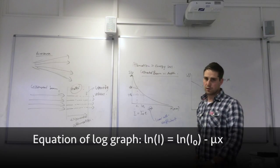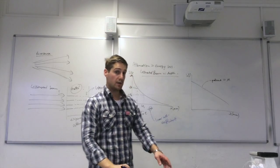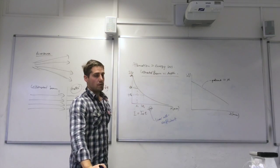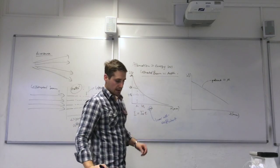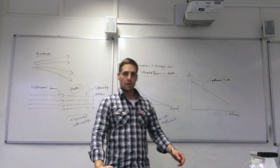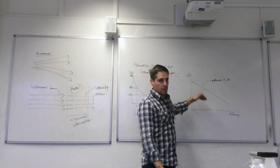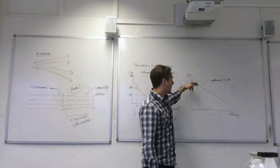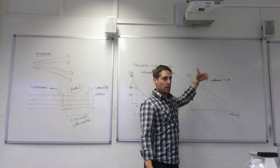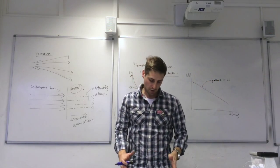The negative gradient would be equal to the linear attenuation coefficient for that particular material. So that's how you can determine it. Note that the graph has a negative gradient. So that means that the negative of a negative value gives you a positive linear attenuation coefficient.